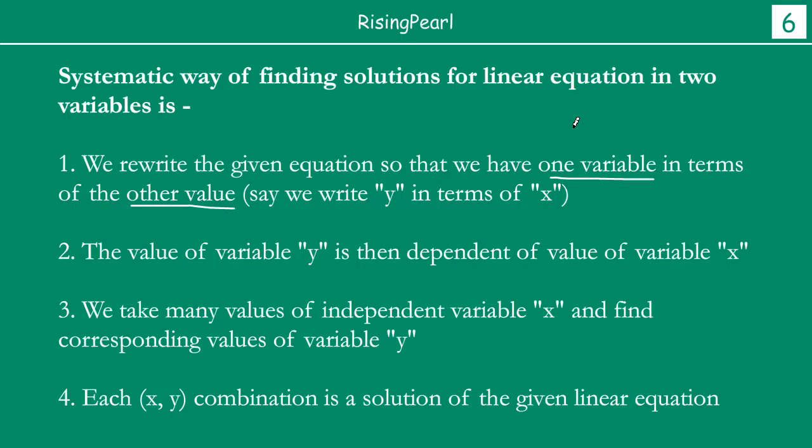What this means is, when you have the standard form ax plus by plus c equal to zero, you want to write either y is equal to something in x, or x is equal to something in y. So this is our first step - we rewrite the same equation so we have one variable in terms of the other variable.